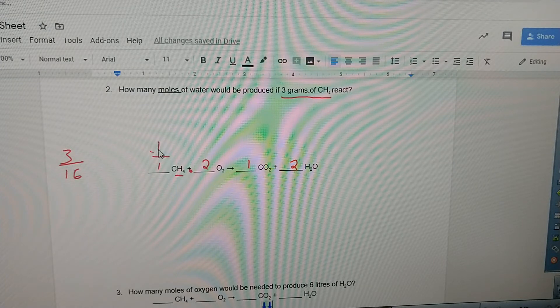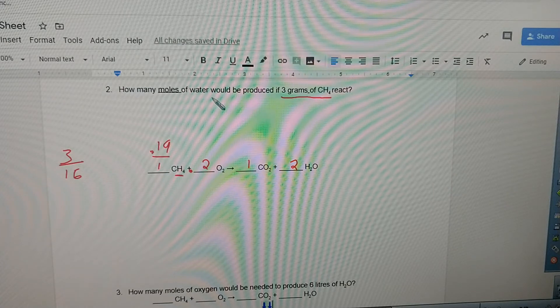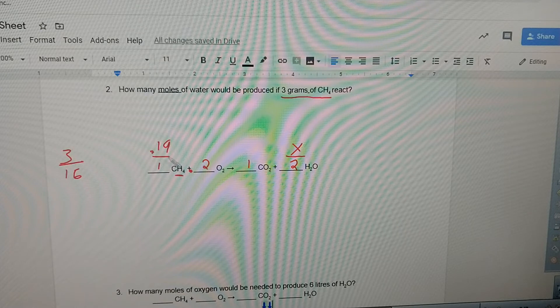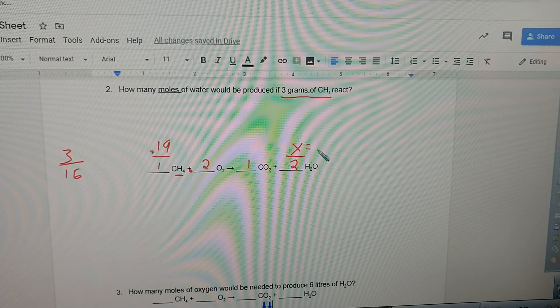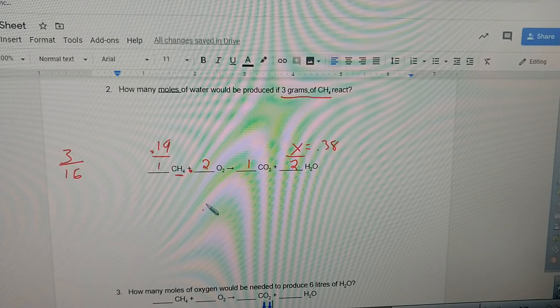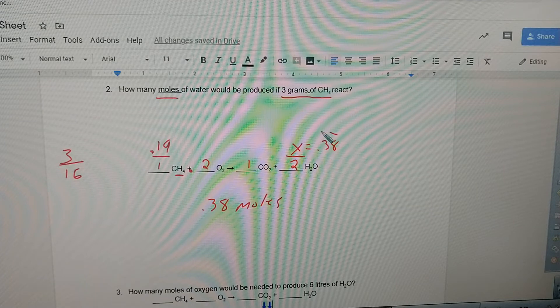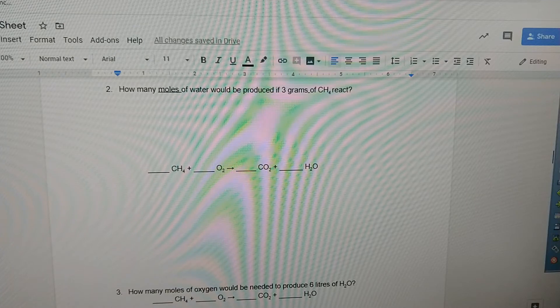So now we have 0.19 moles is to one as how many moles of water as x. 0.19 is to one as x is to two, so that x is going to be 0.38 moles. They said how many moles of water, so we're already done once we get this number. I hope you're catching on, let's try the next one.